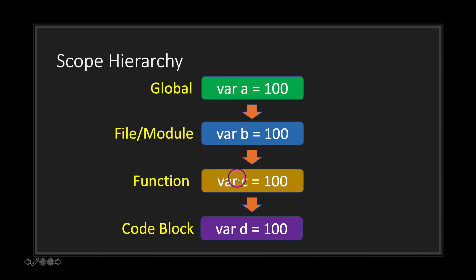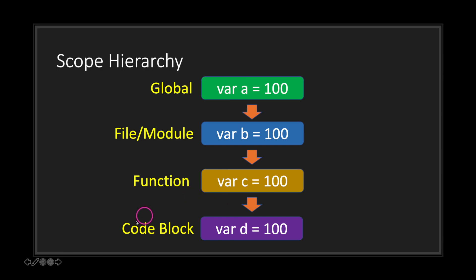Our function scope has variable C, and we have access to variables A and B. However, we do not have access to variable D, because the code block — perhaps a while or for loop — declares variable D but does not propagate it back up the scope hierarchy. So our function doesn't see anything inside the code block.